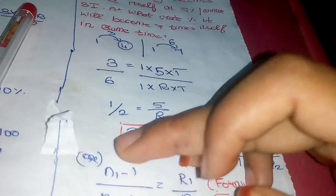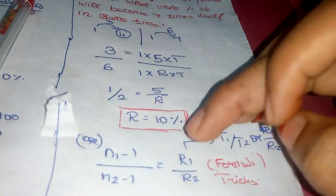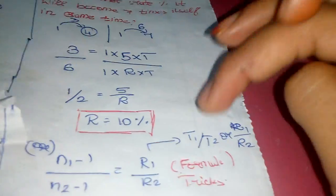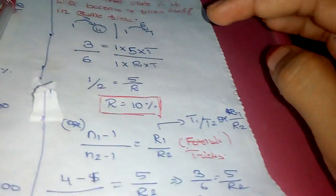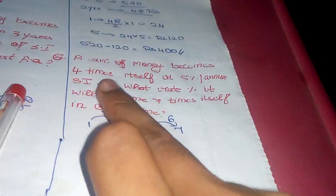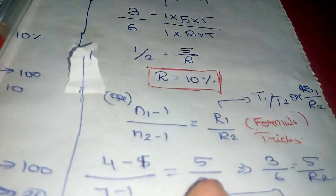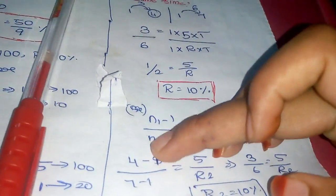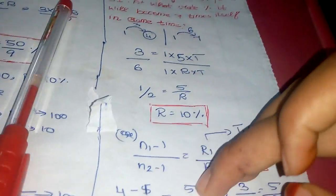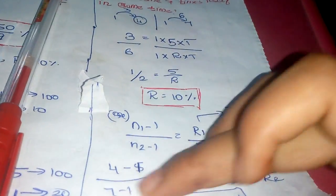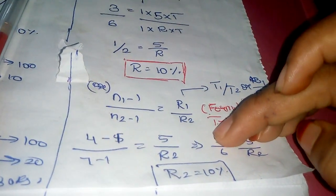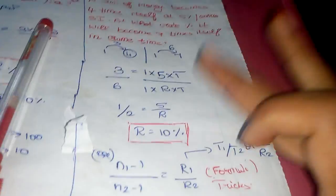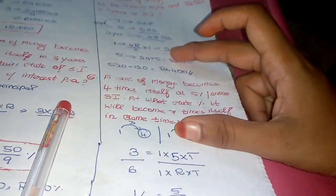Formula: (n1-1)/(n2-1) = r1/r2. If rate of interest is asked, put rate of interest; if time is asked, put time. n1 is number of years for 4 times, so 4 minus 1. n2 is 7 times itself, so 7 minus 1. (4-1)/(7-1) equals 5/r2. Therefore r2 equals 10 percentage.